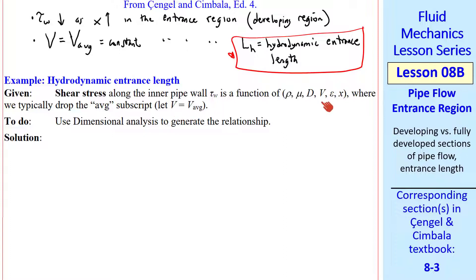Let's use dimensional analysis to generate the relationship for shear stress. Recall from a previous lesson we did this for fully developed pipe flow. We had tau_w as a function of rho, mu, d, V, and epsilon.